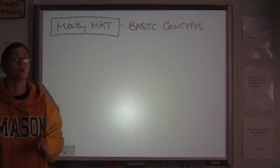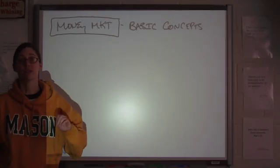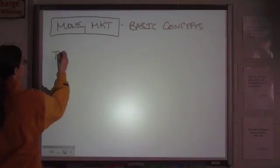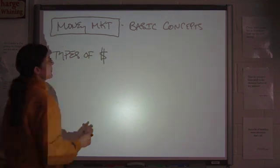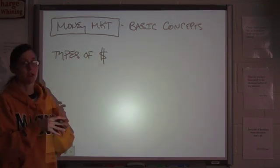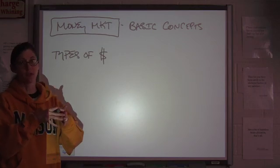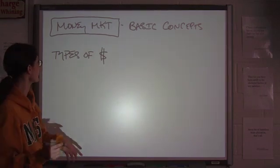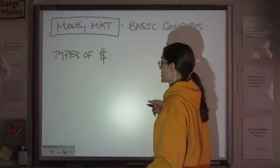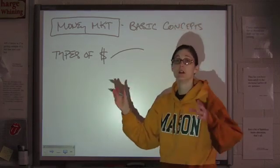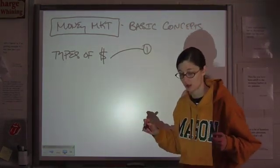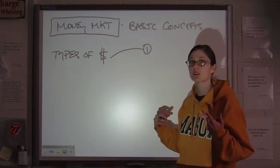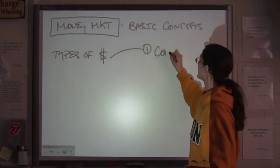The first thing that I want to do is the three different types of money, going from the most basic or the most primitive to what we actually use today. So, starting with the first one, first meaning the one that's been in use the longest, we have commodity money.